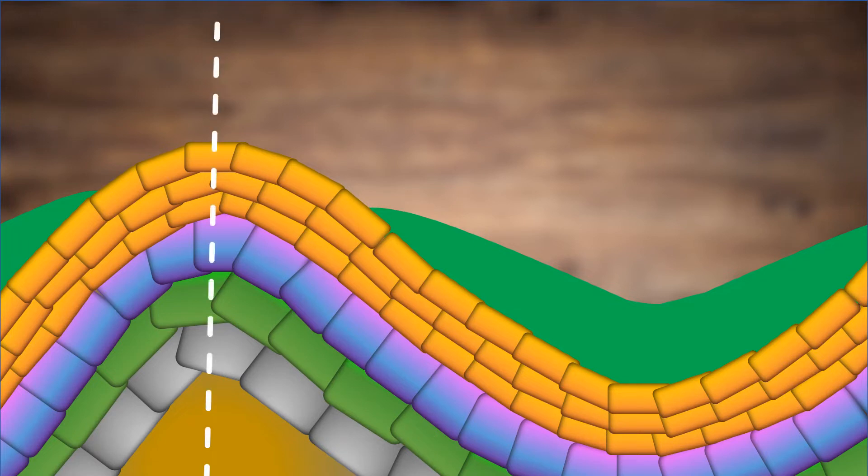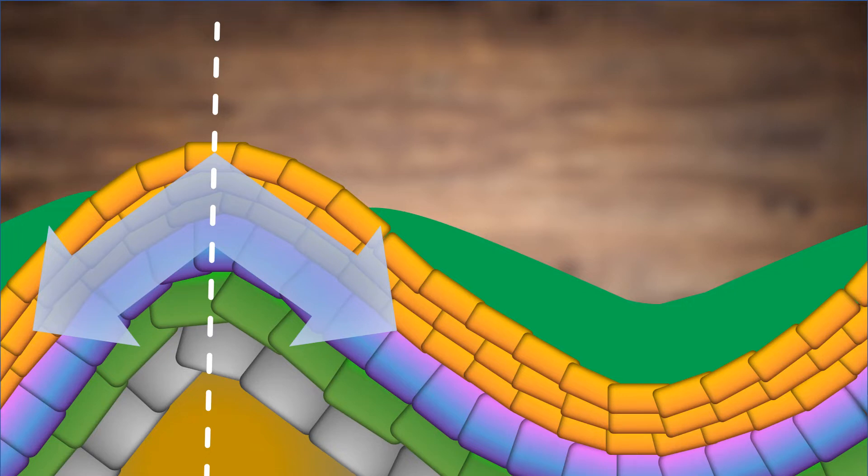This line here is the center crest, and whenever the layers slope downwards from this line, it becomes an anticline.